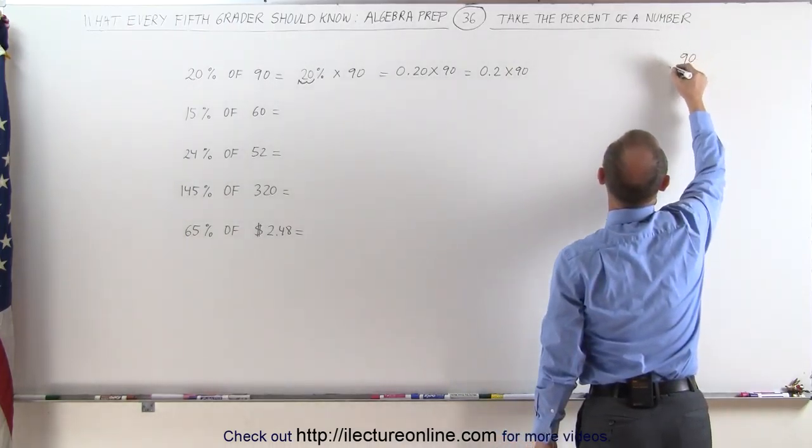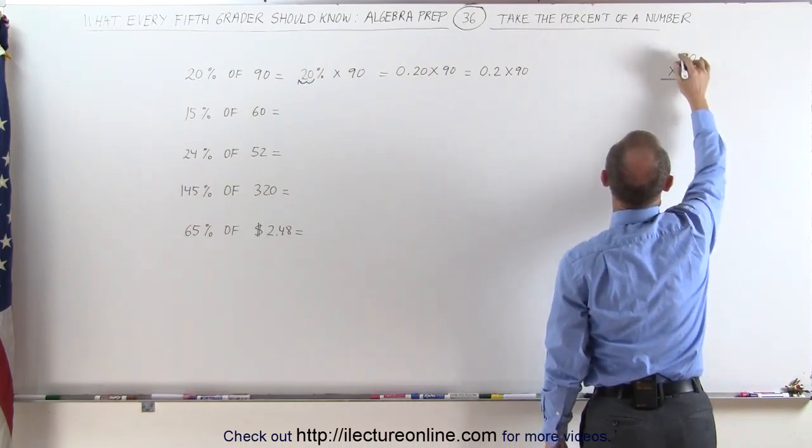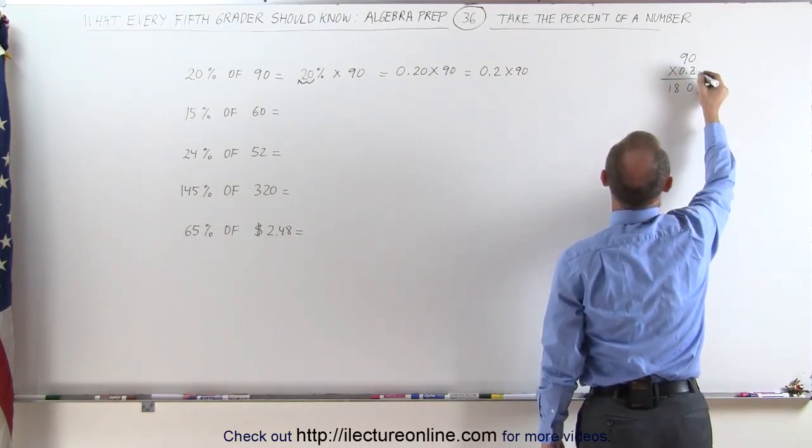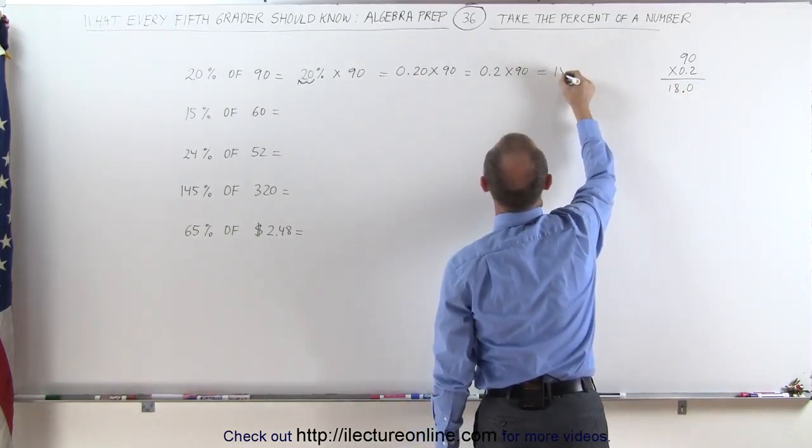Now we need to multiply those two numbers. 90 times 0.2: 2 times 0 is 0, 2 times 9 is 18. We have one decimal place, put that over here. The answer is 18.0 or 18.